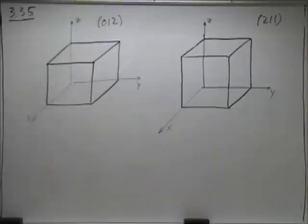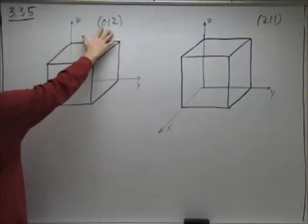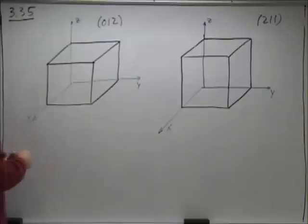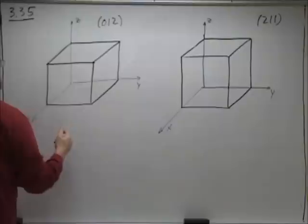All you need to do is take this in reverse of the procedure to get the Miller indices. So take 0, 1, 2 and take the inverse of each of those. So the inverse of 0 is of course undefined.